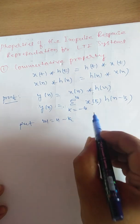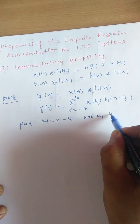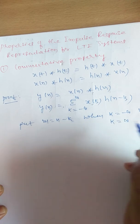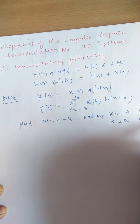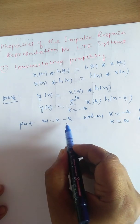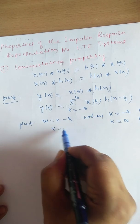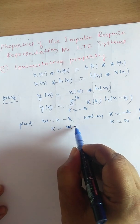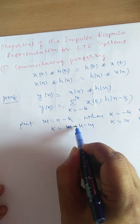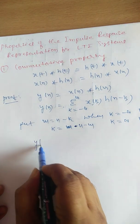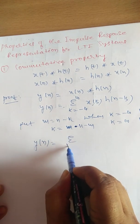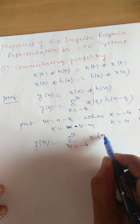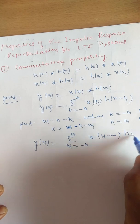When k is equal to minus infinity, m will become plus infinity. When k is equal to plus infinity, m will become minus infinity. From this, we can write k equals n minus m. So we can write y(n) equals summation of m from minus infinity to plus infinity of x(n minus m) into h(m).